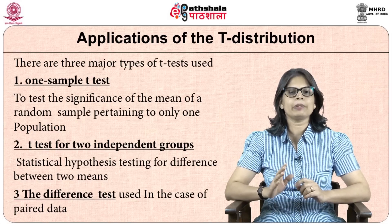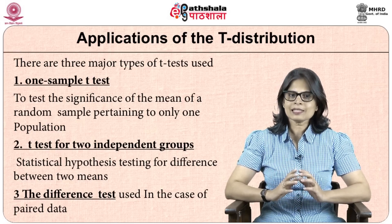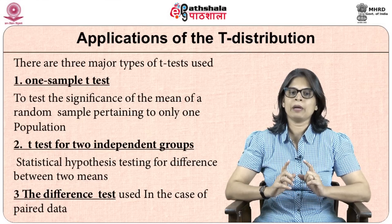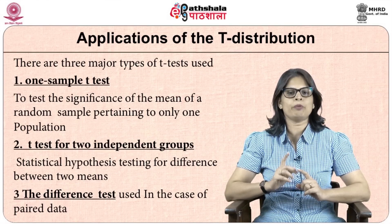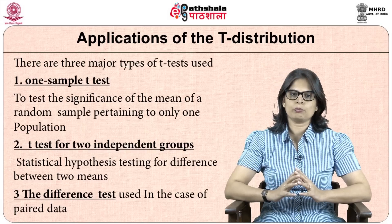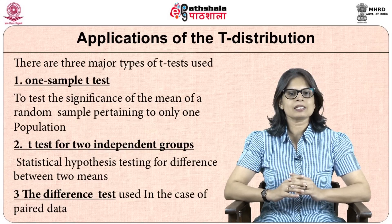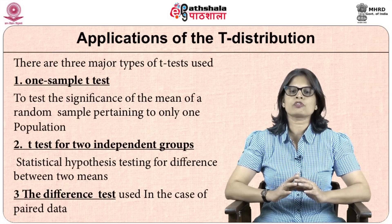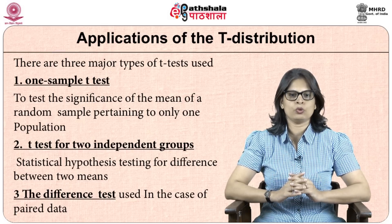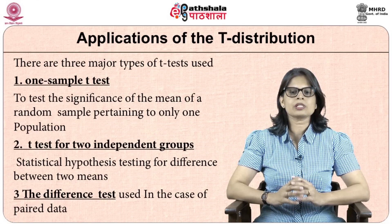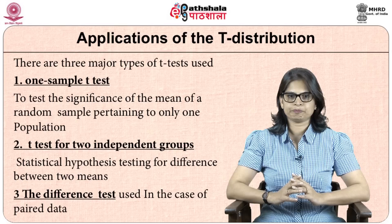The first is the one-sample t-test, used to test the significance of the mean of a random sample pertaining to one population. The second is the t-test for two independent groups, where hypothesis testing is done to understand the difference between two means for two separate independent groups. The third is the difference test, used in the case of paired data.